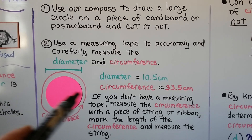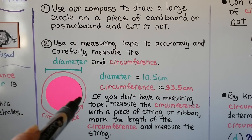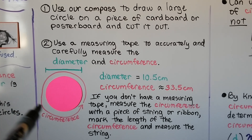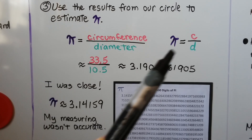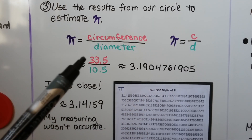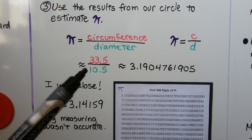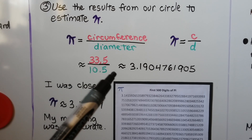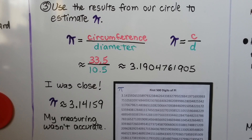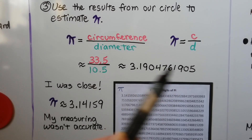My diameter was 10.5 centimeters going across, and my circumference was about 33.5 centimeters. The measuring tape was a little stiff, and it was about as accurate as I could get. Now we use the results from our circle to estimate pi. Pi is the quotient of the circumference and diameter — c divided by d. My circumference was 33.5 and my diameter was 10.5. I do the division and, using an approximate symbol, it came out to about 3.19.